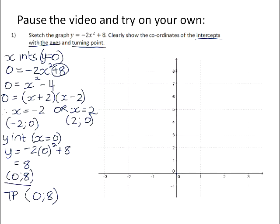And if we plot that point, it looks like that. If we now plot our x-intercepts at negative 2 and positive 2, and we join the three points with a smooth curve,